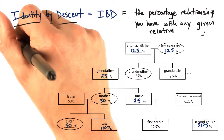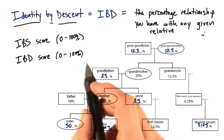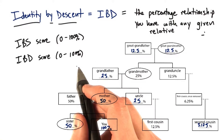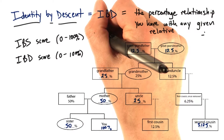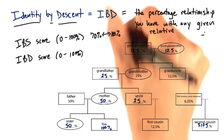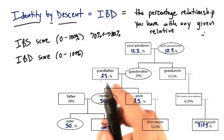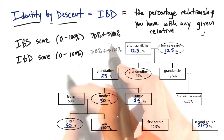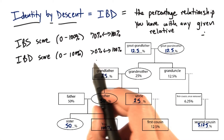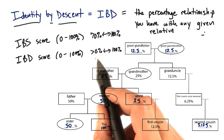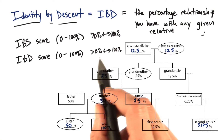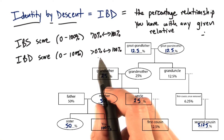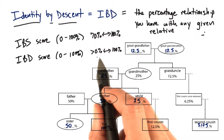In the same way that we have an IBS score, we have an IBD score, and they're both measured from a range of 0 to 100%. But in the case of the IBS score, we generally go from a range of about 70% to 100%, and that's sampling SNVs across the whole genome. But an IBD score can get down pretty close to zero — it's almost never completely 0%, because we're all related through common ancestors at some point, so we share some relations. But it gets to a very low percentage at some point.